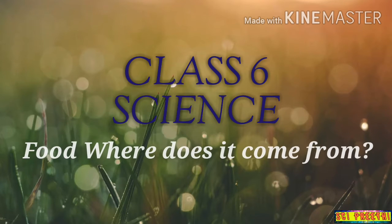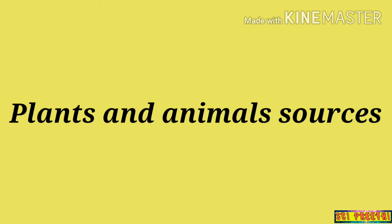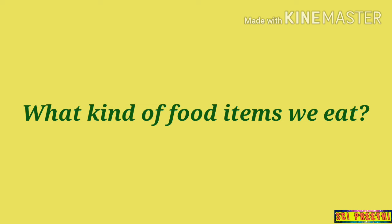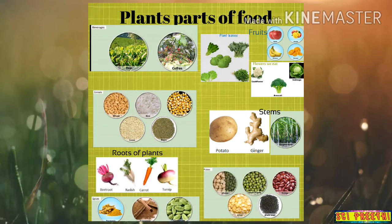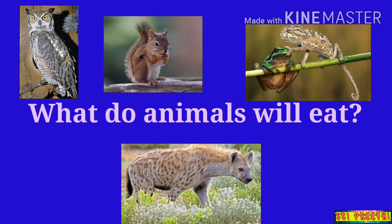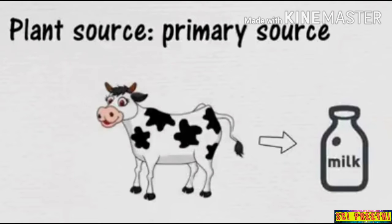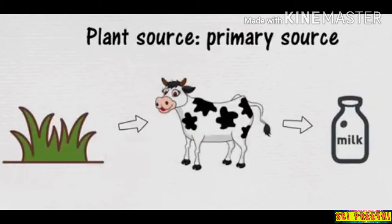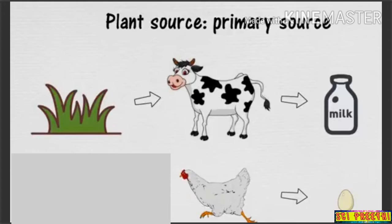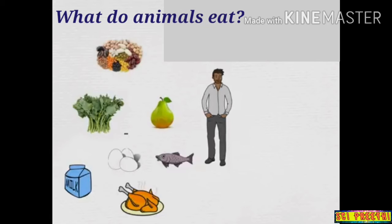Hello children. In the previous class we learnt about the two main sources of food — plant source and animal source. We eat both plant source and animal source. If we study closely, even animal food comes from plants. For example, cows give us milk and eat grass as food, and eggs come from hens which eat grains as food.